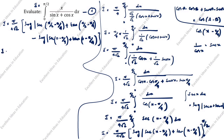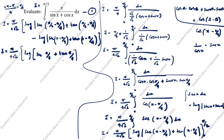Substituting the limits: at x = π/2, we get sec(π/2 - π/4) + tan(π/2 - π/4) = sec(π/4) + tan(π/4). At x = 0, we get sec(0 - π/4) + tan(0 - π/4) = sec(-π/4) + tan(-π/4). Since sec(-π/4) = sec(π/4) = √2 and tan(-π/4) = -tan(π/4) = -1, the expression at 0 becomes (√2 - 1).